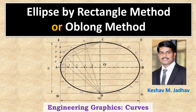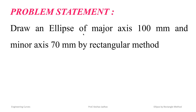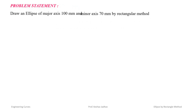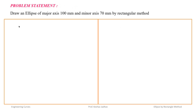Hello and welcome to this video. In this video I will explain how to draw an ellipse by rectangle method, which is also called the oblong method. Let us take a problem: draw an ellipse of major axis 100 mm and minor axis 70 mm by rectangular method. Major axis and minor axis lengths are given, so we can draw by rectangle method.